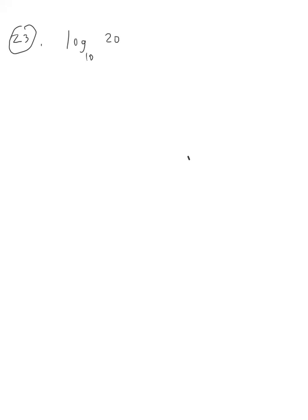Problem 23 asks us to find the exact value of log base 10 of 20 plus log base 10 of 5. Since those logarithms are added together, we can join them into one by multiplying what's inside them and putting them into a single log base 10.